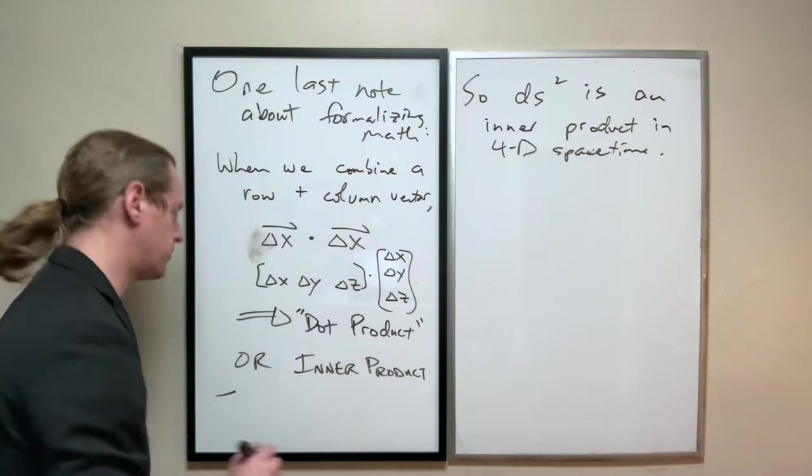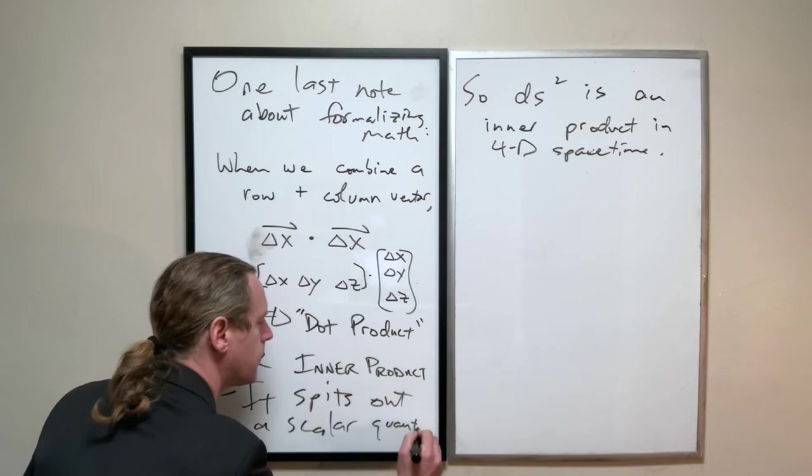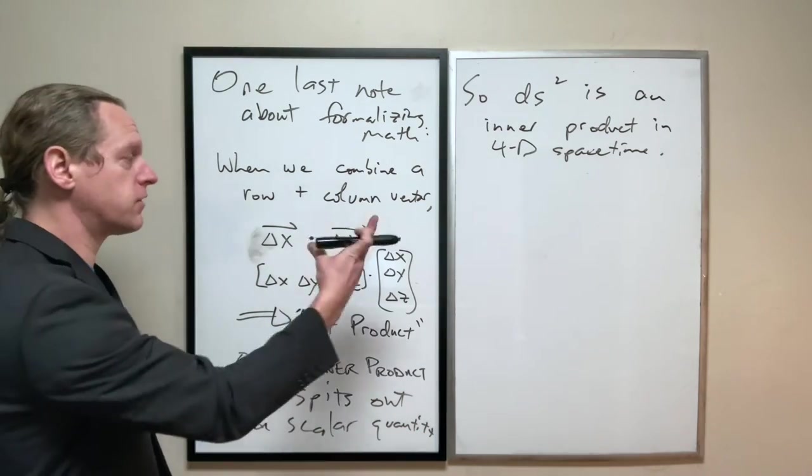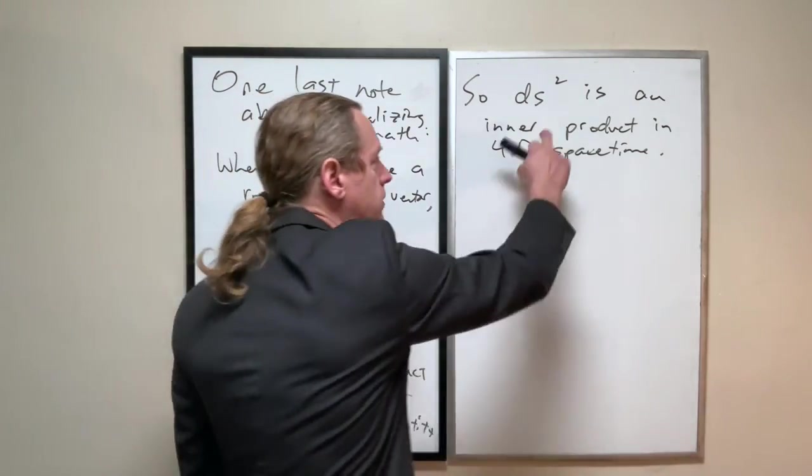By the way, that's the important part of this. So it spits out a scalar quantity, which is that scalar quantity, the space-time separation. And now let's see exactly how that works here.